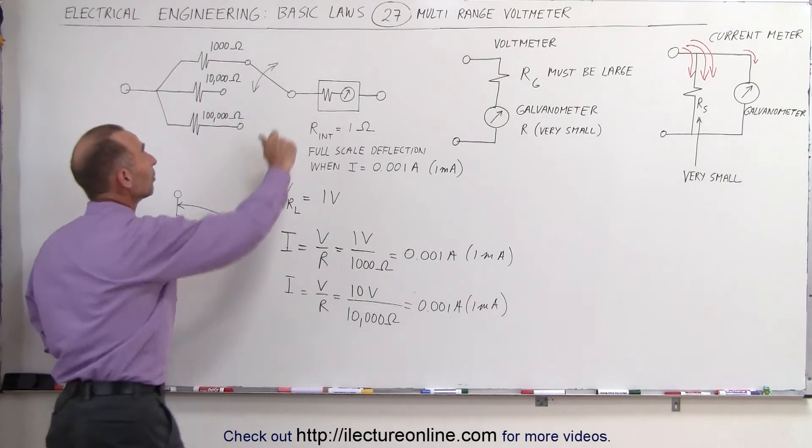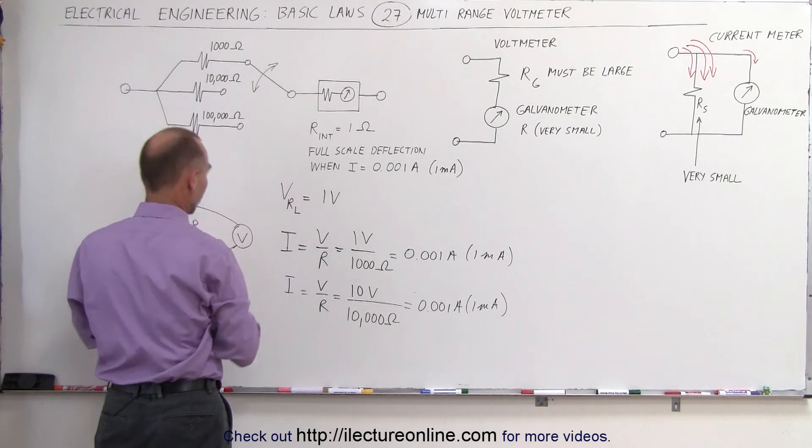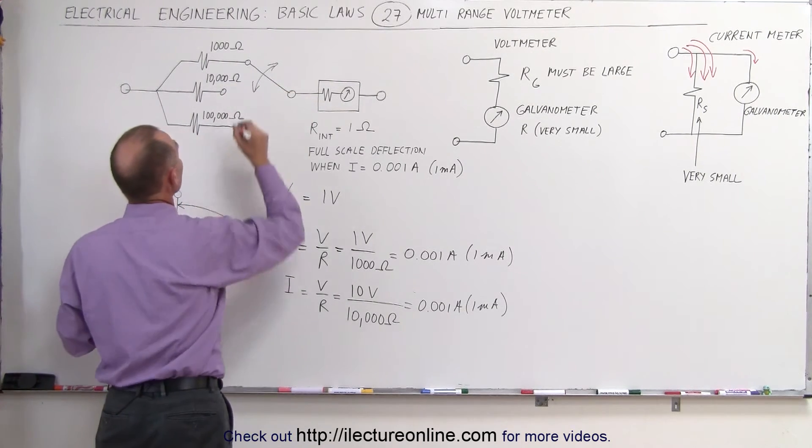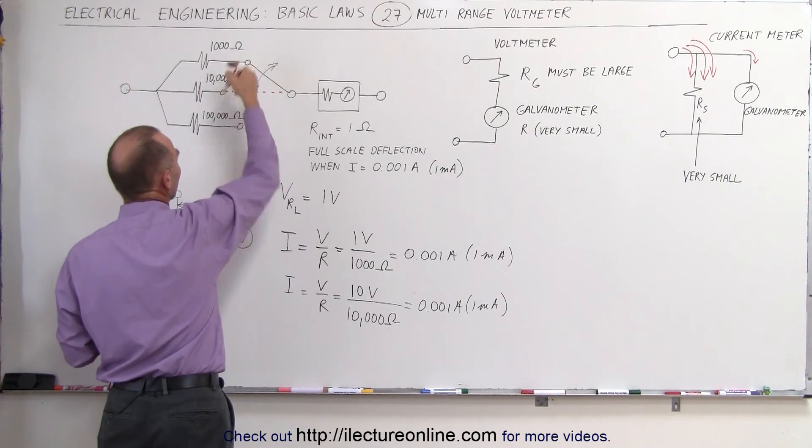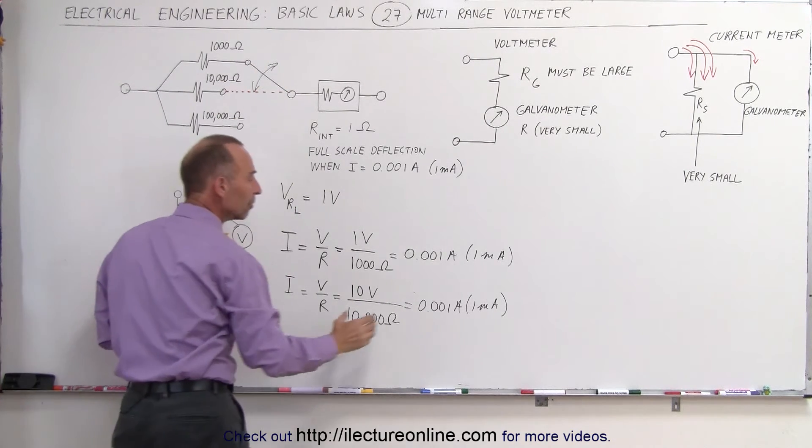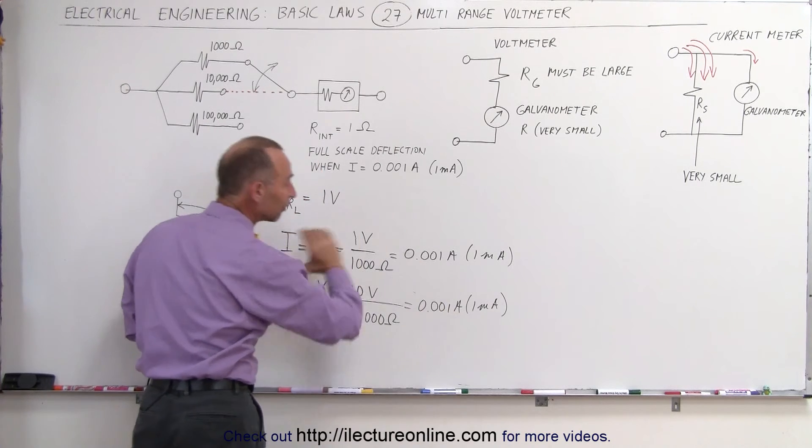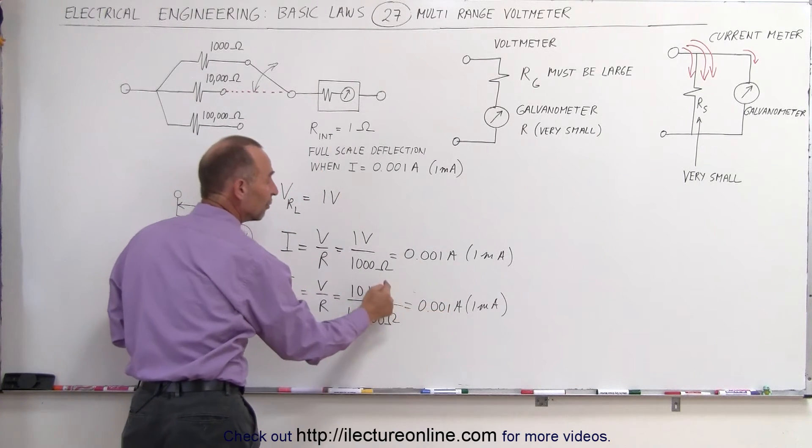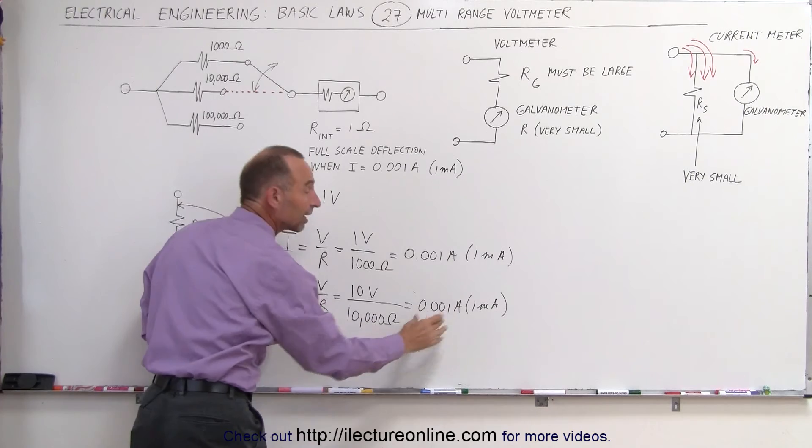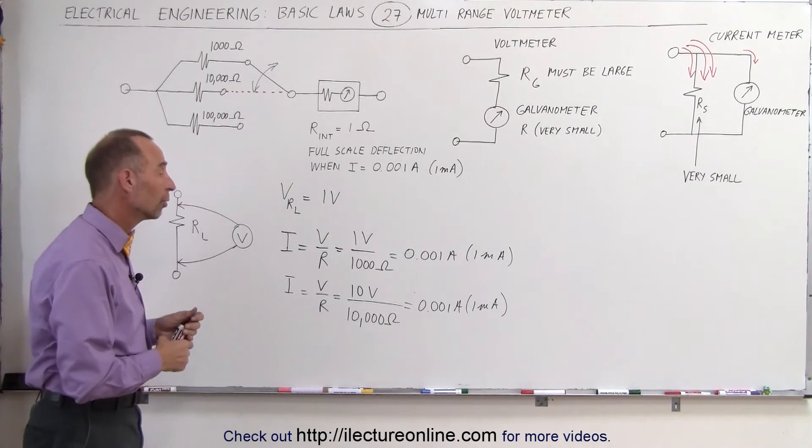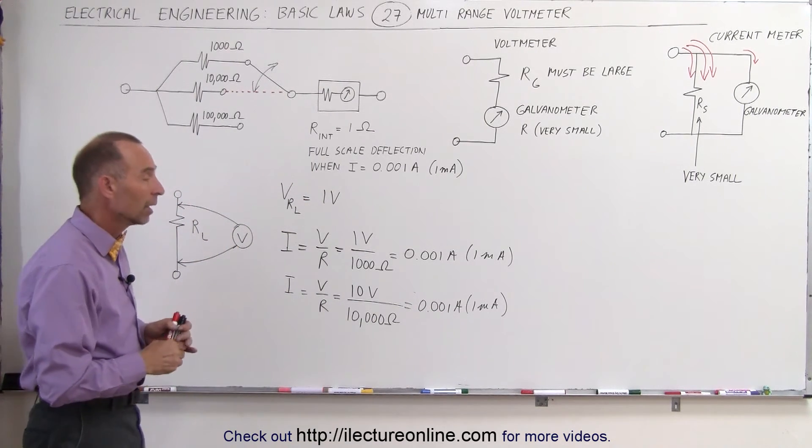Which means that if we change the knob, and we have the knob setting to over here, let me change the color here, so if we now connect it to the middle resistor instead of the top resistor, we can actually measure higher voltages because even with higher voltages, we still would not exceed the 1 milliamp restriction to the galvanometer.